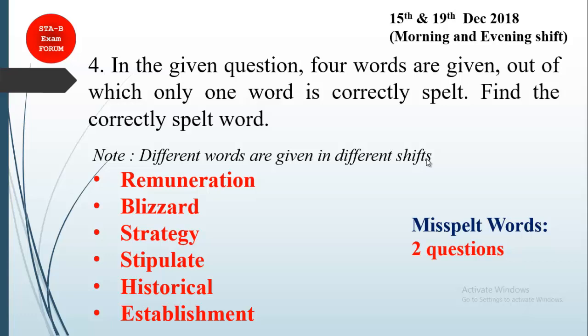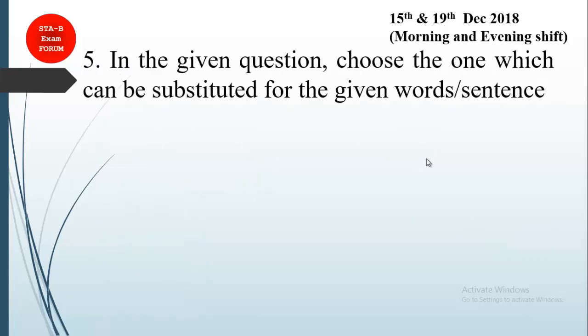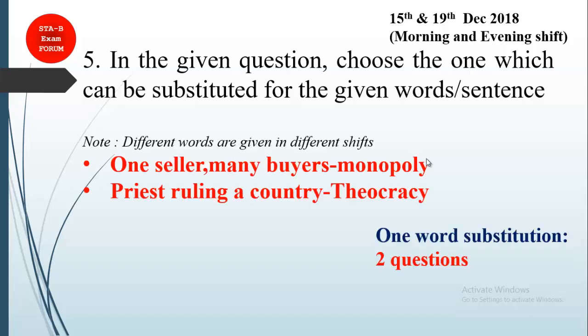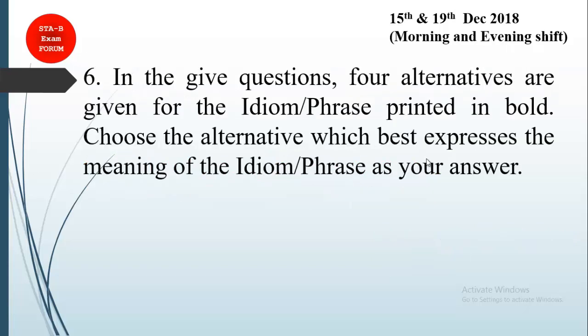Coming to the next question: choose one word which can be substituted for the given phrase — this is one word substitution. Two examples students could remember: 'one seller, many buyers' — the one word substitution is monopoly. Similarly, 'a priest ruling a country' — the one word for that is theocracy. Accordingly you can plan your English language preparation.